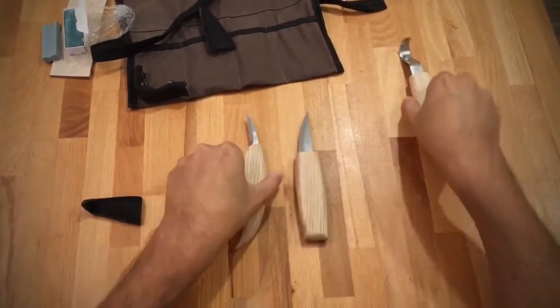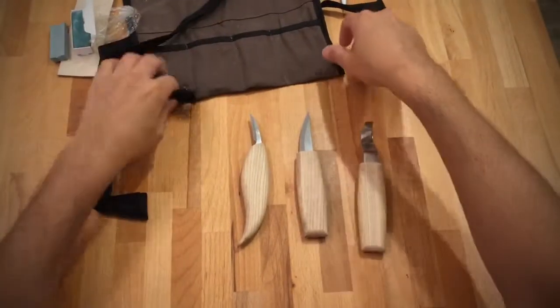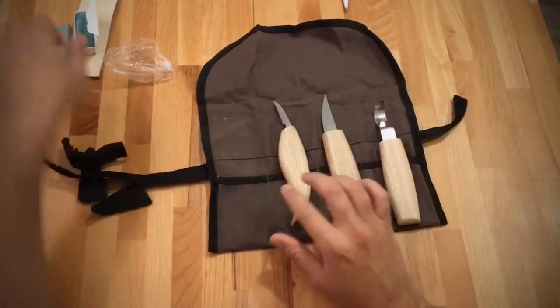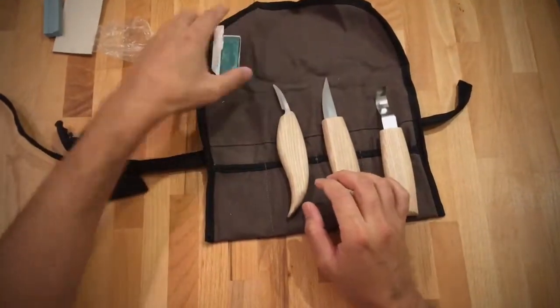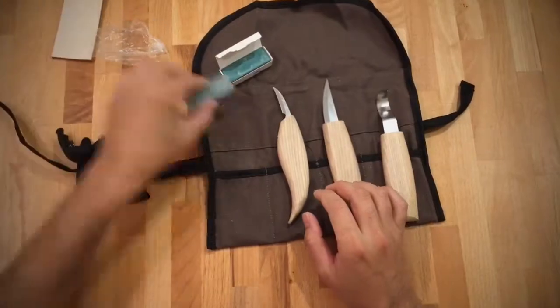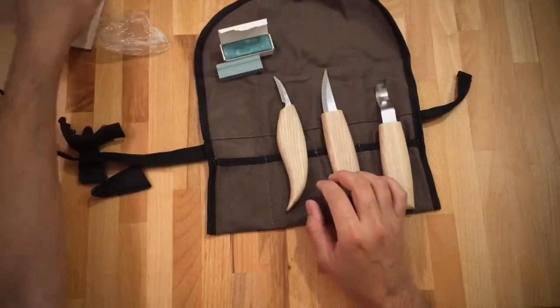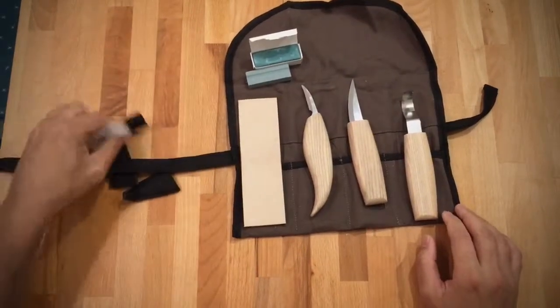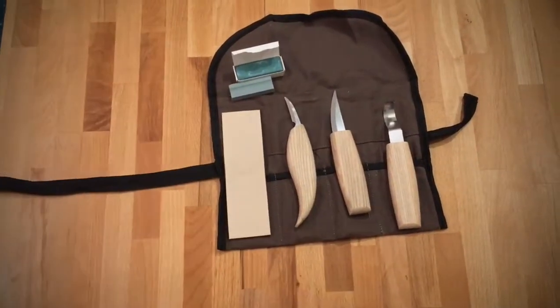That concludes this brief overview. We have the three blades here. We have the compound for the strop. We have a sharpening stone. And we have the strop, the leather strop. That concludes this review.